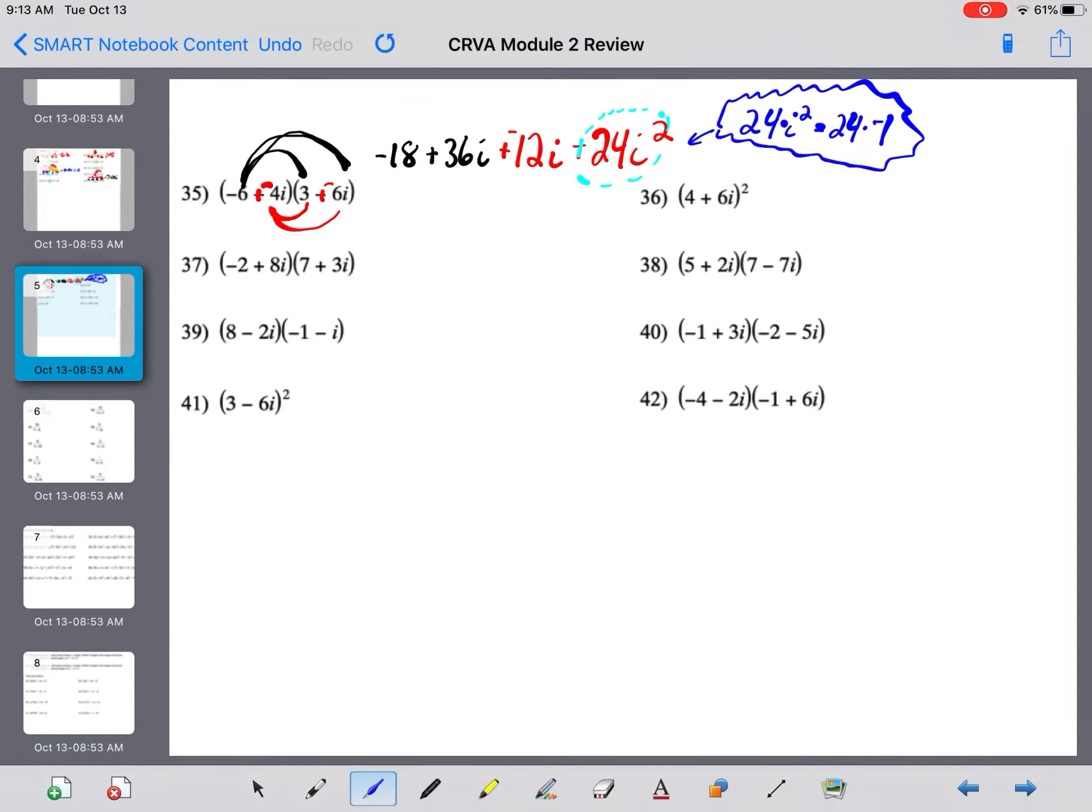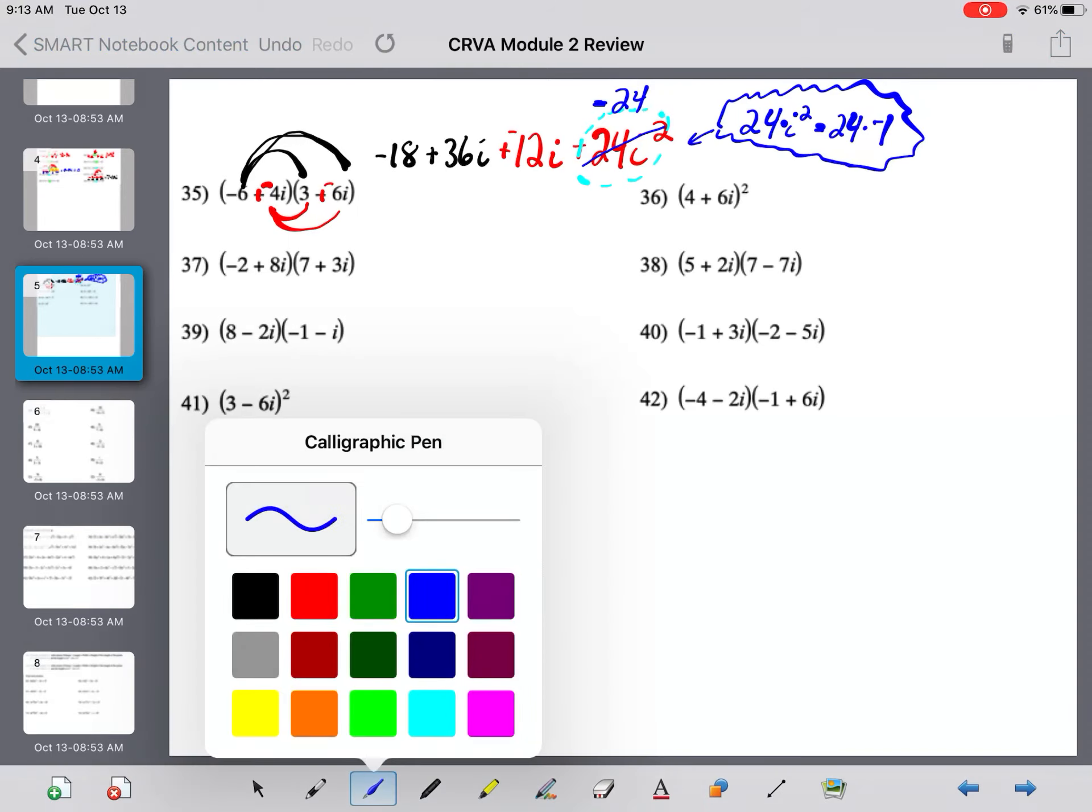And, then, really, that 24 times negative 1, this whole bubble really just becomes negative 24. And, now, folks, check this out. It's a lot like what we were doing up above.